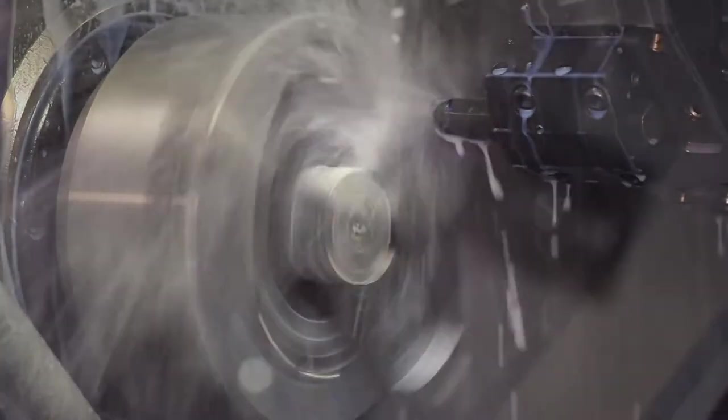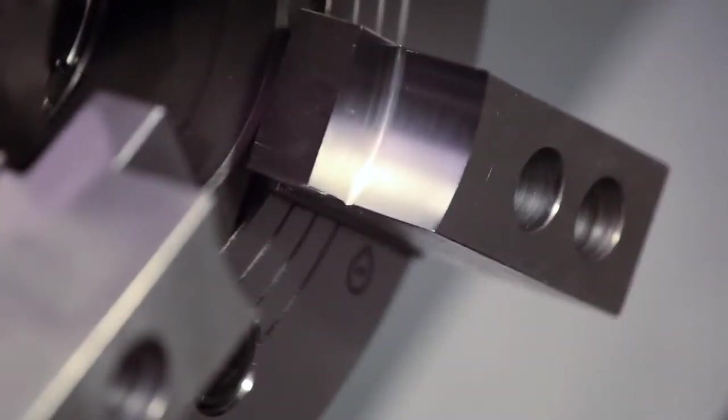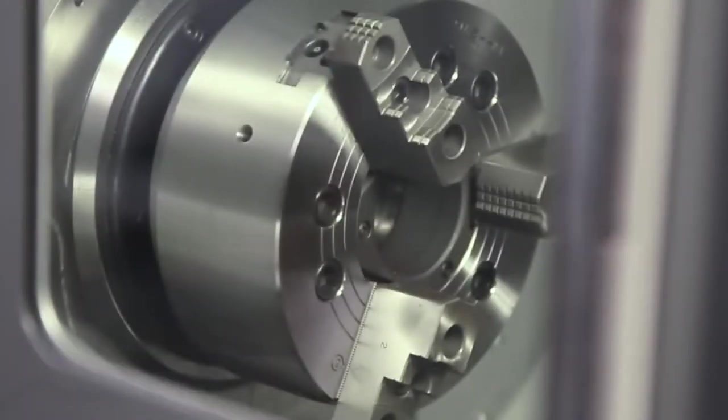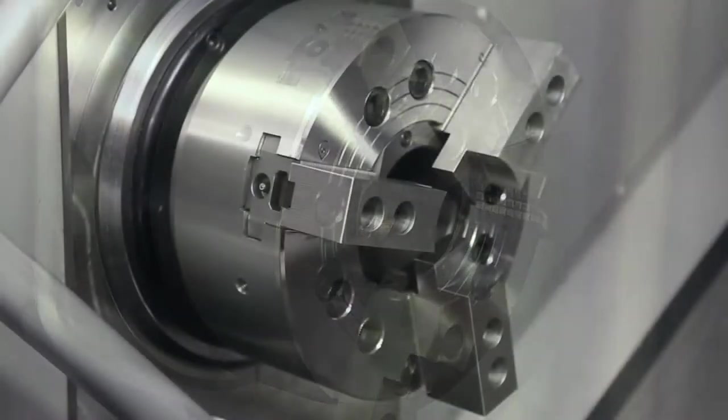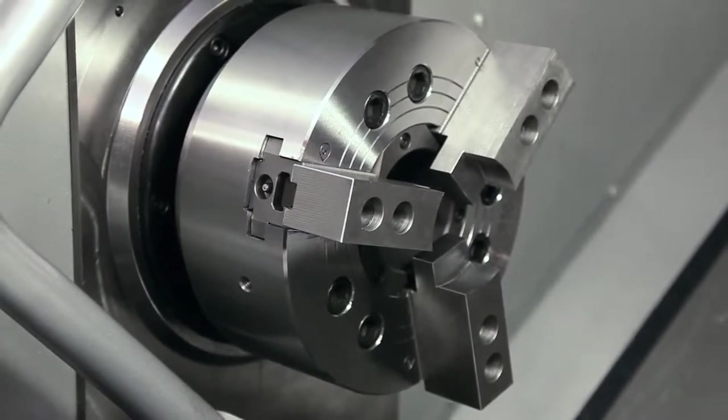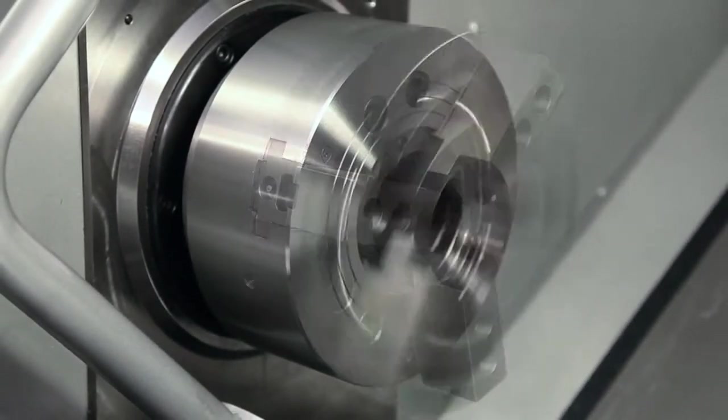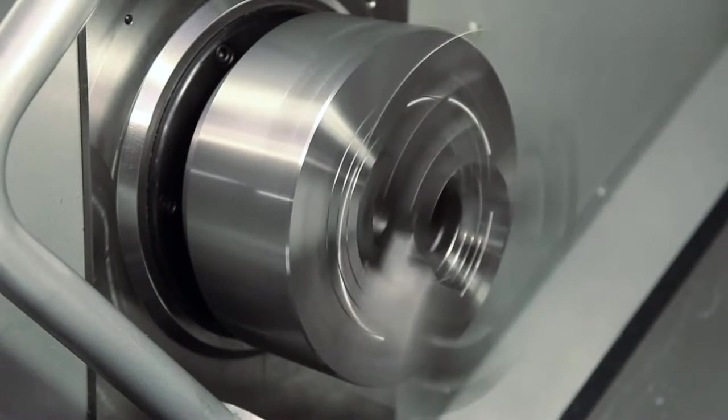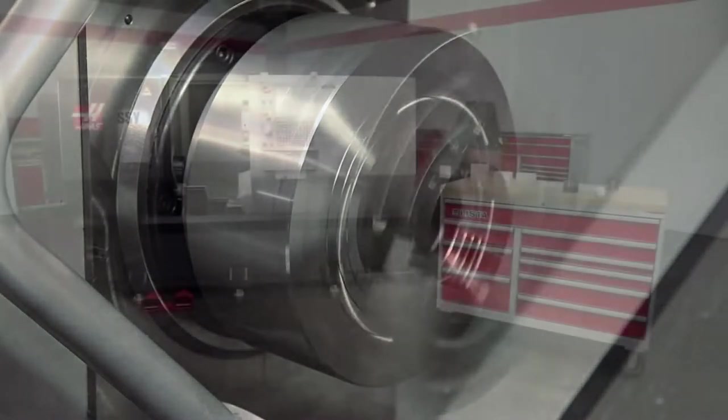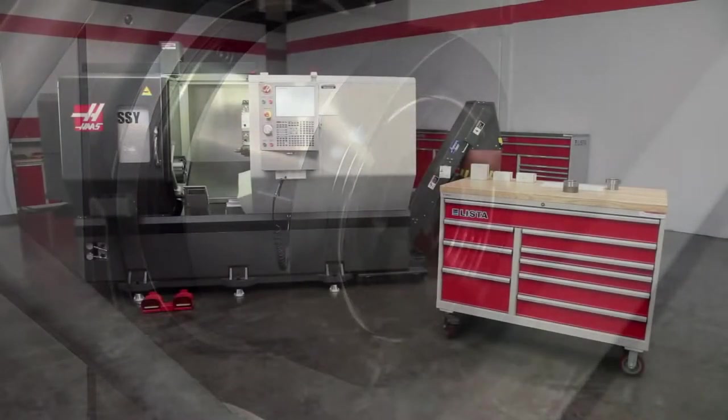Welcome to the Lathe Soft Jaw video series brought to you by Haas Automation. Soft jaws offer several benefits not provided by hard jaws. They align the workpiece exactly to the spindle center every time and locate the back face precisely. They are required when holding difficult shapes and any part that must be made accurately.